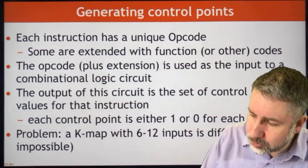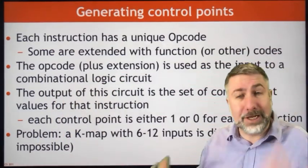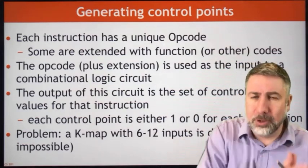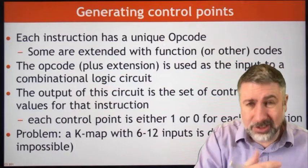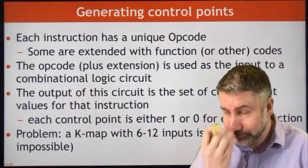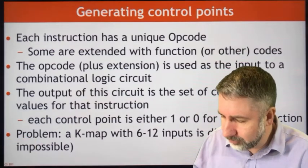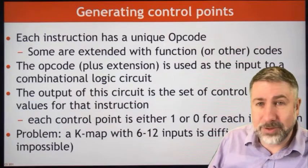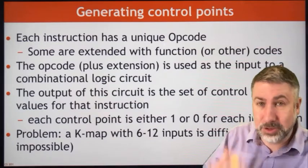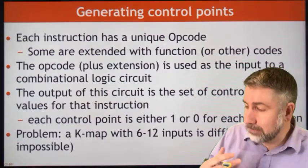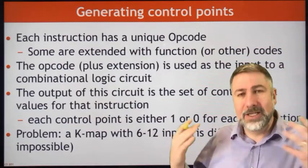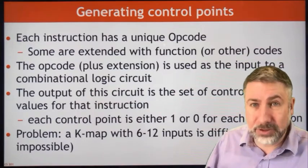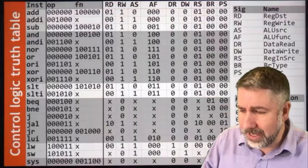The opcode plus any extensions are used as input to a combinational logic circuit, which produces as outputs the values of the control points that choose multiplexer selections to make the hardware do the right thing. The output of that circuit is the set of control point values. This is actually a problem to build because you have at minimum six inputs (the six-bit opcode), sometimes 12 or 18 inputs — so we can't use a K-map for this.